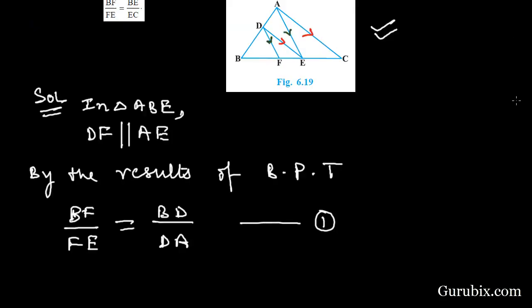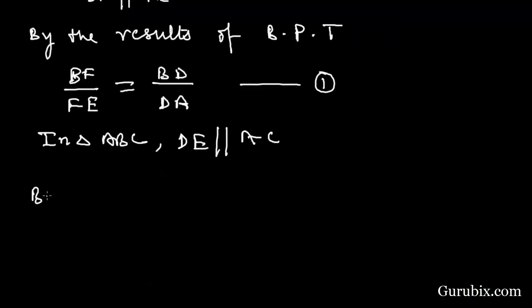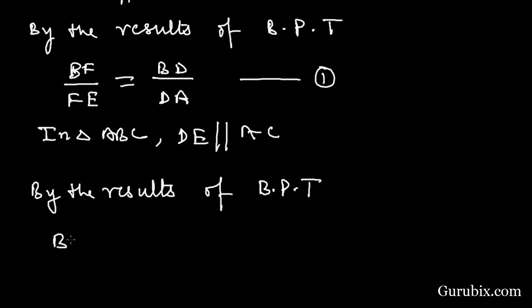Now we shall move to triangle ABC. We are given that DE is parallel to AC. Therefore, by the results of BPT, BE over EC equals BD over DA. This is our equation number 2.